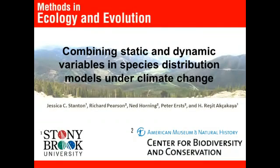Species distribution models, also known as ecological niche models, were initially developed as single time-step snapshots of how species are distributed in the world or on a landscape. Increasingly, distribution models have been applied to assess the potential impacts of future climate change, adding the additional dimension of time to the approach. Adding this dimension of time requires that some additional thought and care be given to the selection of predictor variables and how those variables are used in these models.